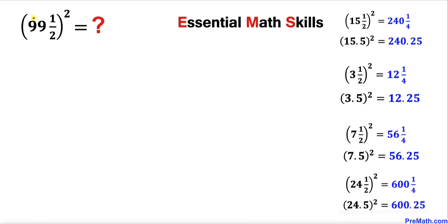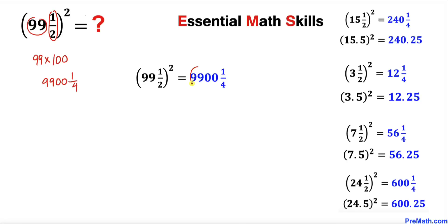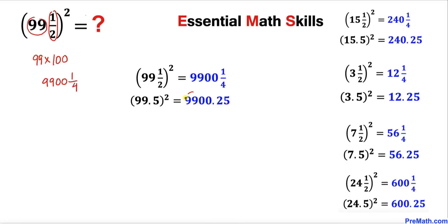Finally, let's focus on ninety nine. Ninety nine times the number after it, one hundred, gives us ninety nine hundred. The square of one over two is one fourth. So the answer turns out to be ninety nine hundred and one fourth, and in terms of decimals, ninety nine hundred point two five.